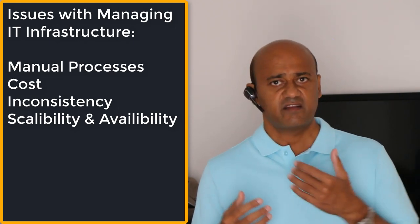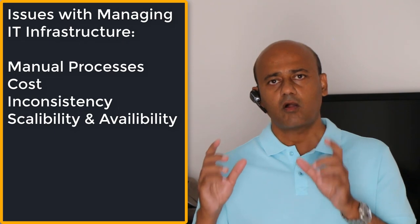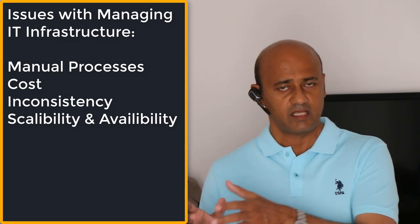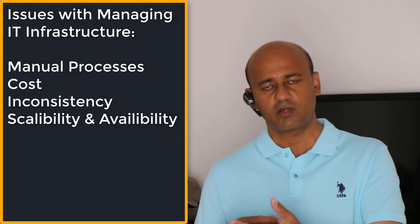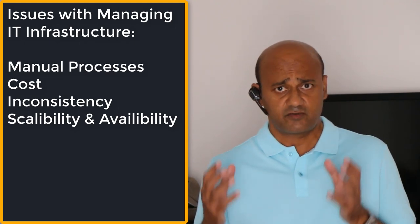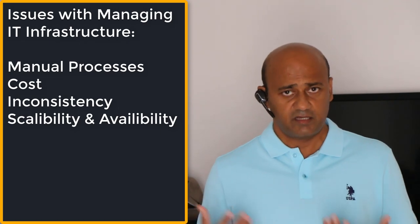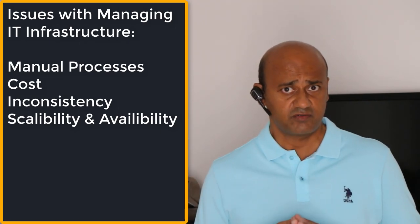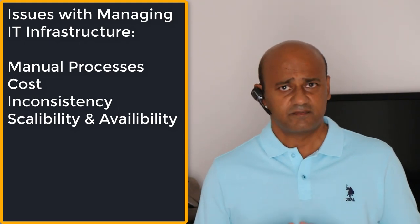The next big problems are scalability and availability, but in the end it all comes down to speed and delivery. Since manual configuration is slow, applications struggle to deliver their real value. Desperately trying to set up servers impacts availability, scalability, and reliability. Then there is inconsistency — every engineer works with their own set of configuration parameters, and once changes are made it is really difficult to put everything together.